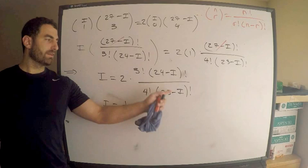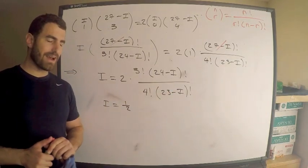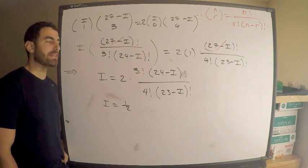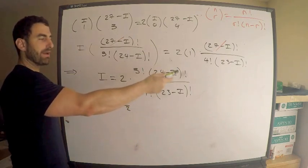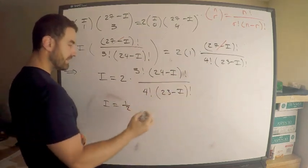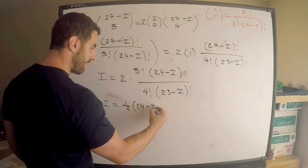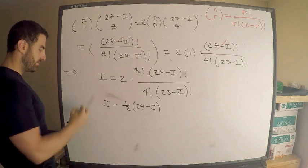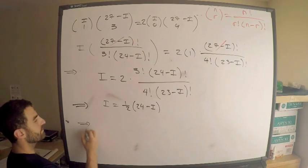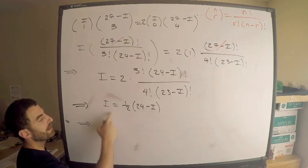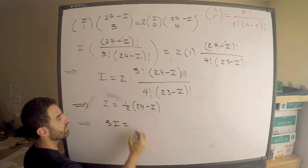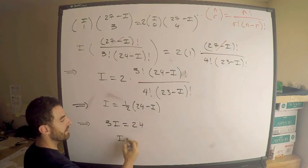Now, what is 24 minus I factorial divided by 23 minus I factorial? Remember what factorial means. This is going to be 24 minus I times 23 minus I times 22 minus I, etc. This is 23 minus I times 22 minus I. So what does this equal? This is just 24 minus I. That is quite nice. Linear equation in the unknown I, which means I can find it. I can absolutely find it. This tells me that 2I equals 24 minus I. So it looks like 3I equals 24. So it looks like I is equal to 8.